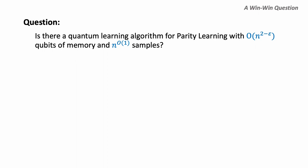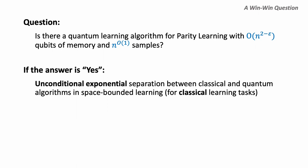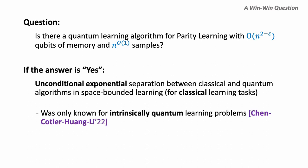This question is a win-win question. If the answer is yes — meaning there is a sub-quadratic learning algorithm that solves the problem with polynomial samples — then the parity learning problem itself becomes an unconditional exponential separation for classical and quantum learning algorithms with bounded space. Previously, we knew of such separations, but only for inherently quantum learning problems where the samples are given as quantum states. We do not have any example for classical learning problems, and we believe it would be very exciting if parity learning could provide such a separation.